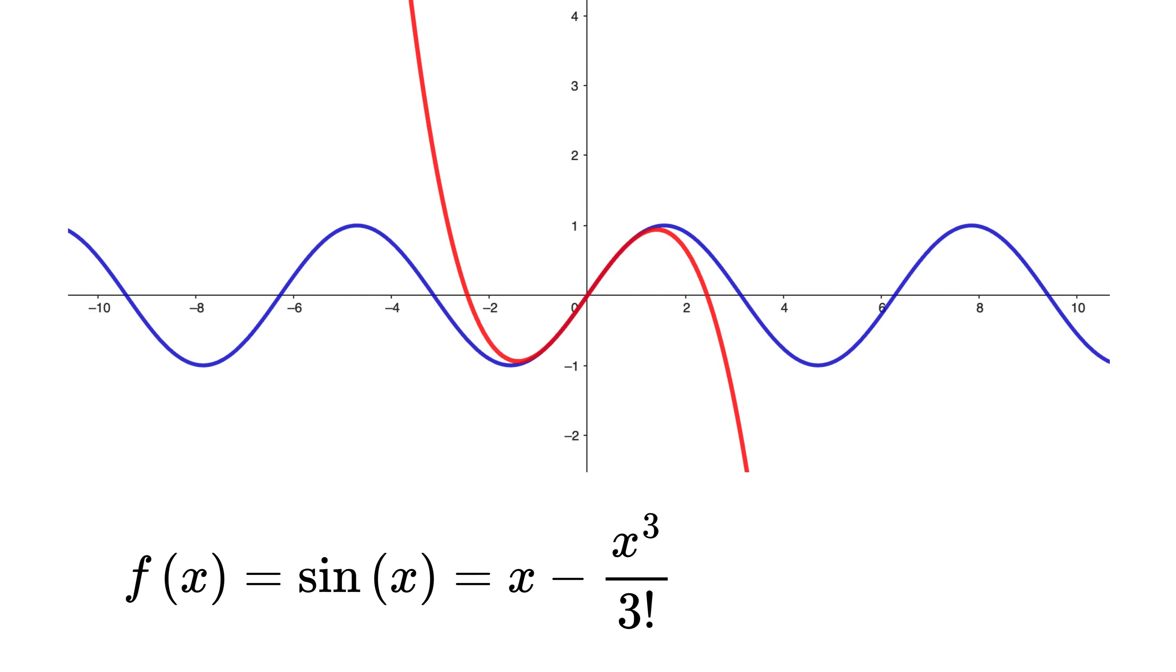Still not a sine wave but getting a bit curvy. Next let's add x to the power 5 divided by 5 factorial, that is 120. So now we have this. The curve starts to bend up again after dipping, creating a small wave-like pattern. Interesting, right?